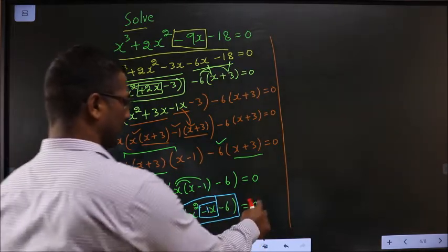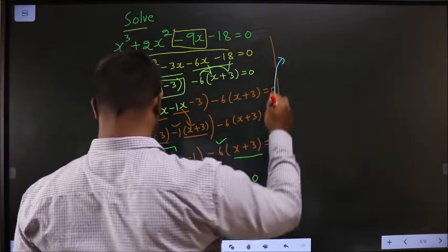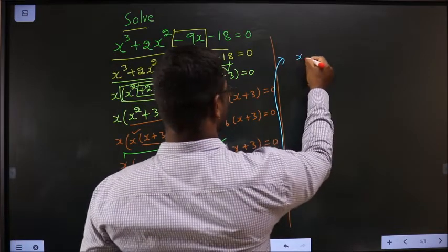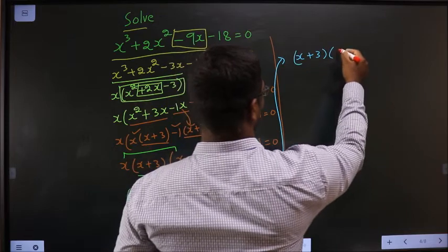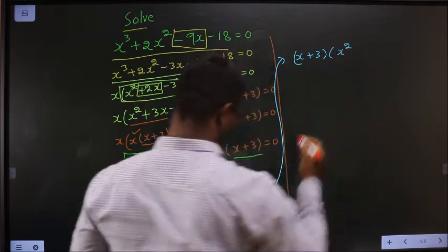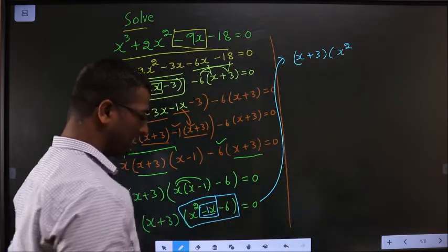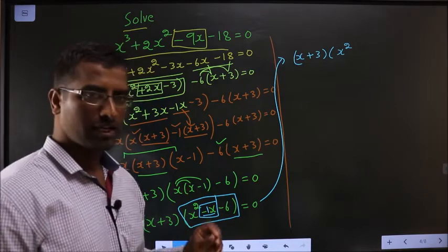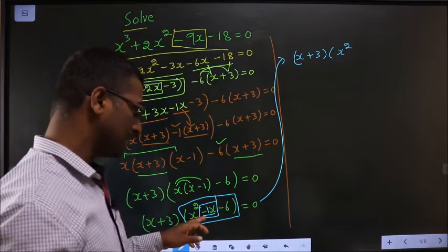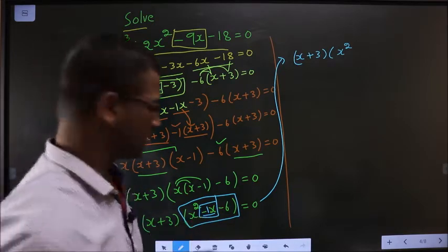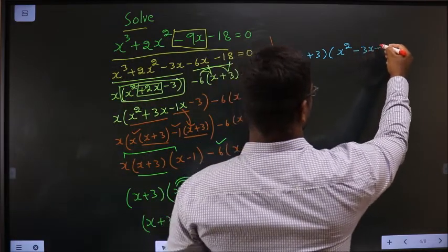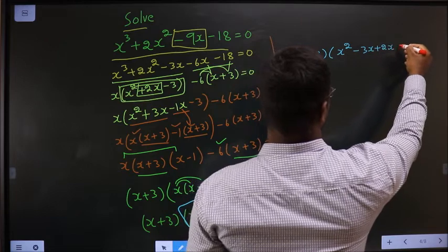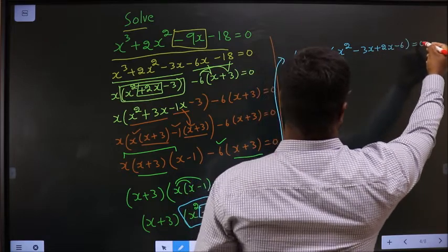So this is x plus 3 brackets x square. Now in place of minus 1x, I will be writing minus 3x plus 2x. So minus 3x plus 2x minus 6 equal to 0.